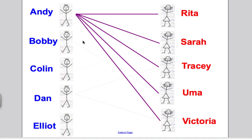Bobby was only compatible with Uma, so we'll draw a line between Bobby and Uma. Colin was just compatible with Sarah, so Colin has a line between himself and Sarah. Dan was compatible with Tracy and Victoria, so we draw lines between them. But poor old Elliot is not compatible with anyone, so we have no line for Elliot between himself and any of the women.